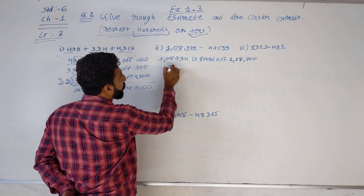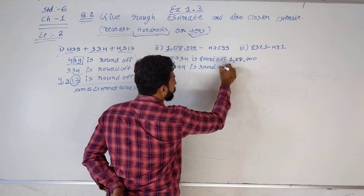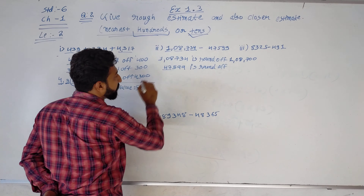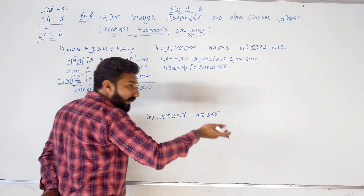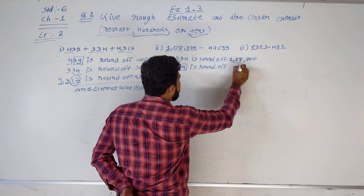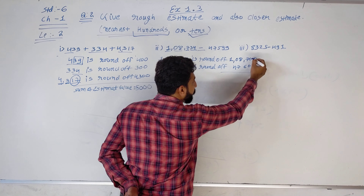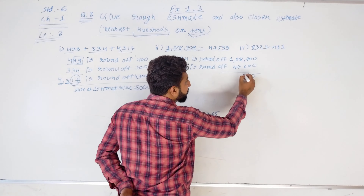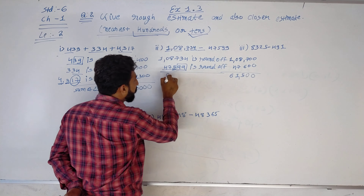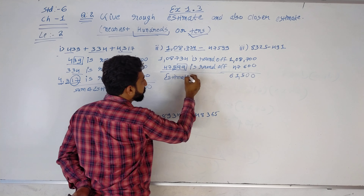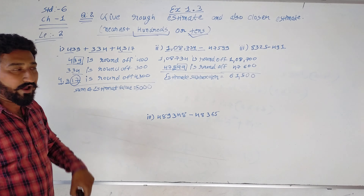Second value: 47599 is round of — 99 is the nearest to the next round of value, so it becomes 47600. Now we get the subtraction: 7 minus 6 becomes 1, 8 minus 7 becomes 1, 10 minus 1 becomes 6. Estimate subtraction is equal to 61500.